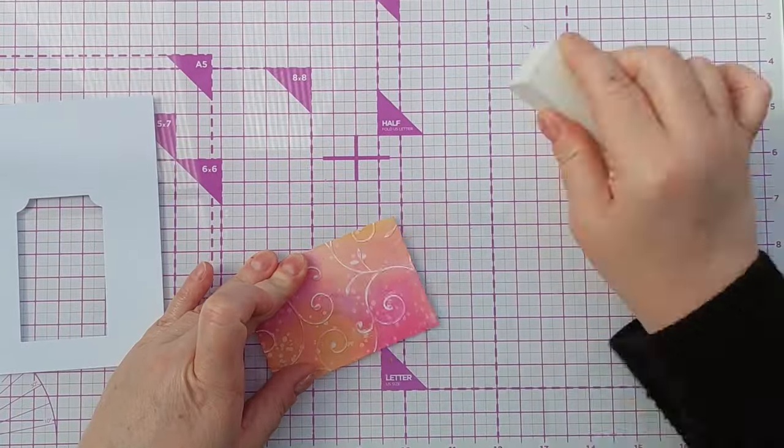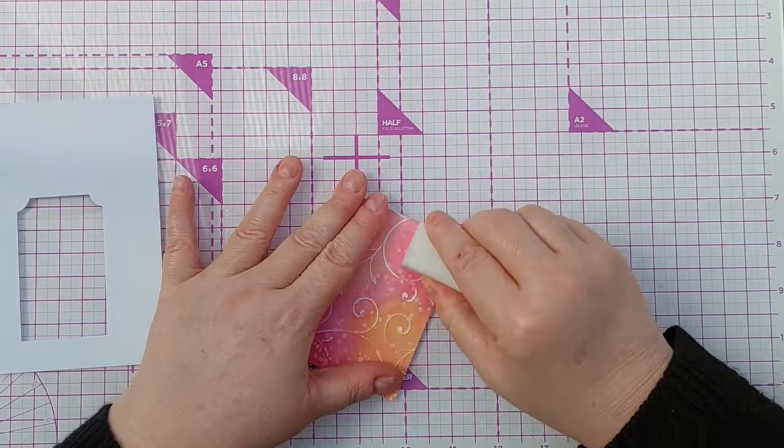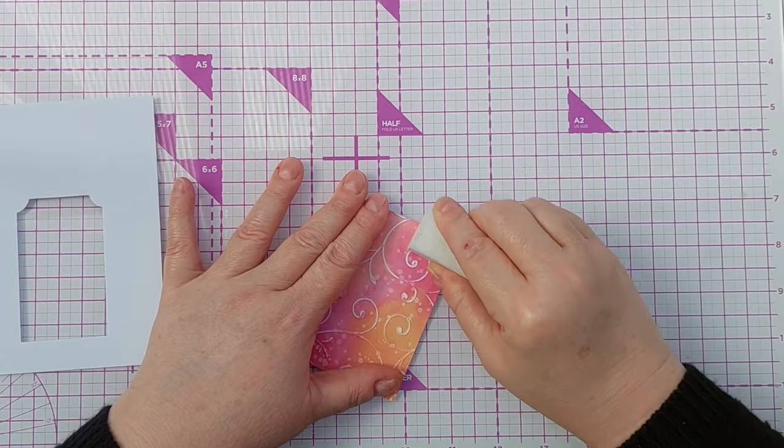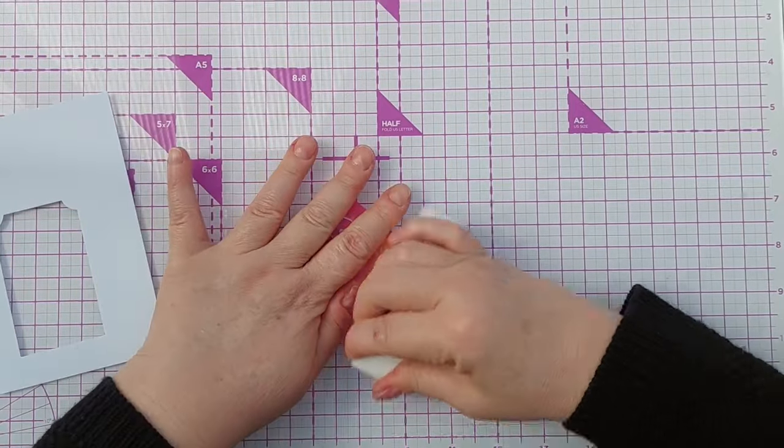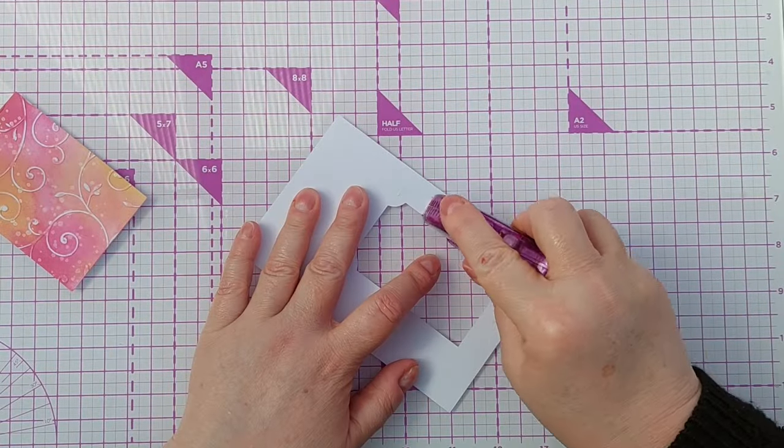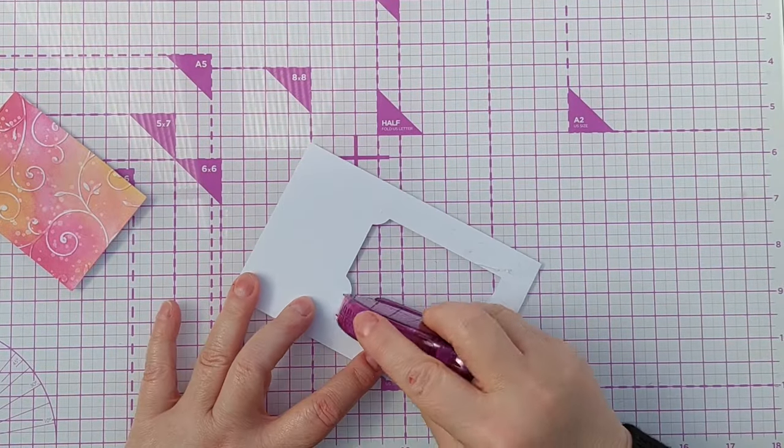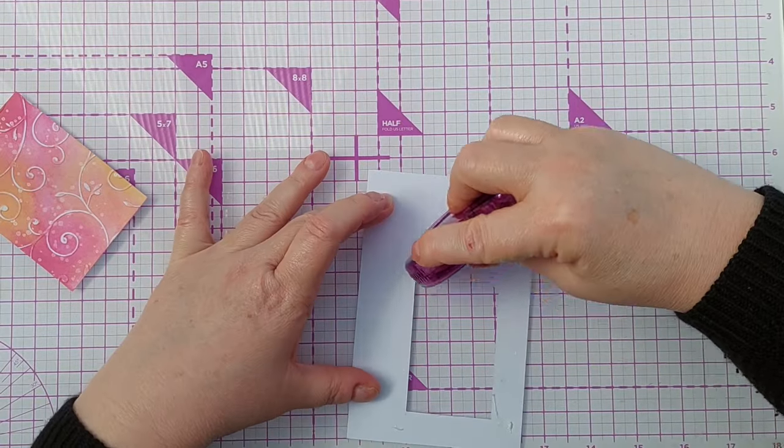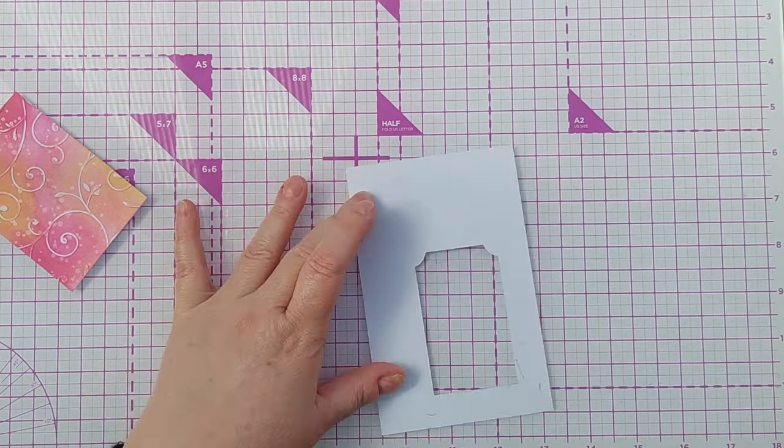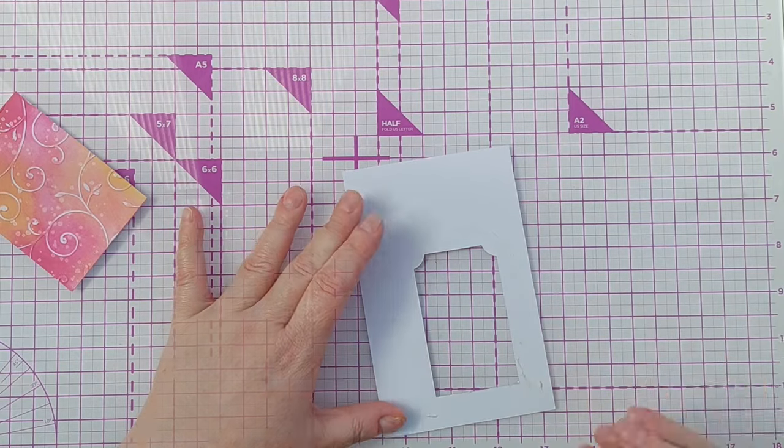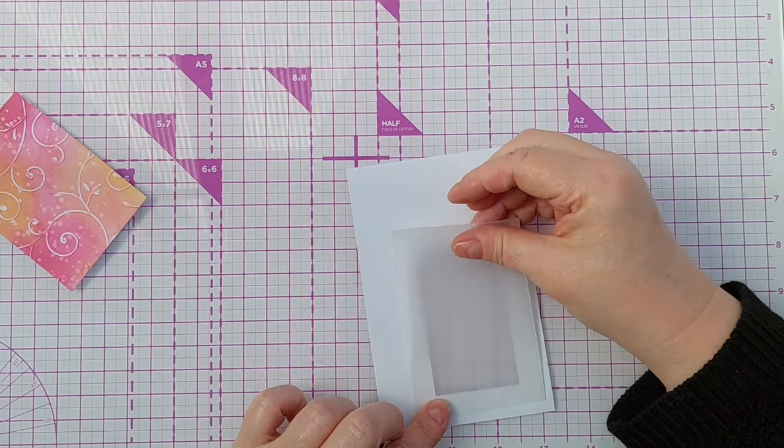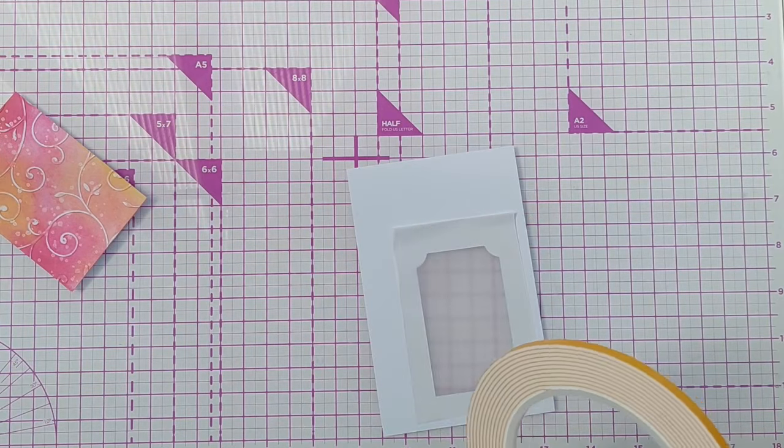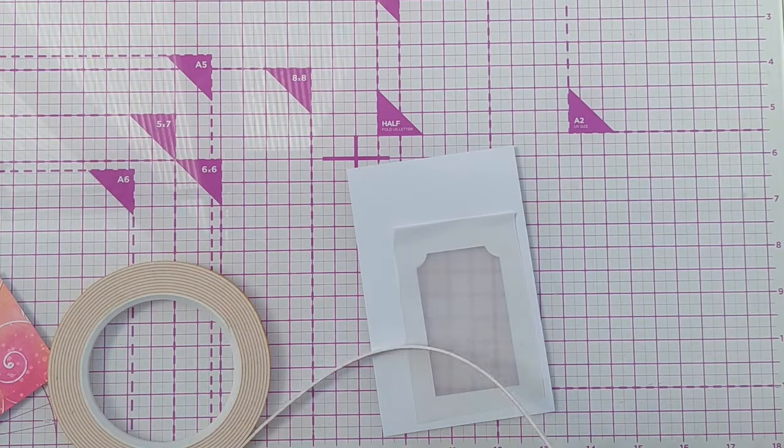So my intention with this shaker card was to use acetate behind my aperture so you could see all that lovely texture on the panel that I just created. But when I went to grab some acetate I realized I didn't have any to hand. So in the end I grabbed vellum and added a bit of vellum behind my aperture. So this is translucent rather than transparent—you can still see through it but you can't see all the details.